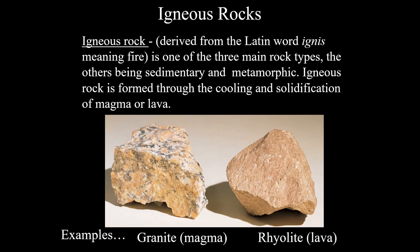Igneous rocks are derived from the Latin word ignis — that's where we get the word ignition — which means fire. These are rocks that come from molten rock, and molten rock by definition has to be very hot, on the order of 1,200 to 1,500 degrees Celsius or higher. These very hot liquids eventually cool and form igneous rocks through the cooling and solidification or crystallization of a magma or lava.